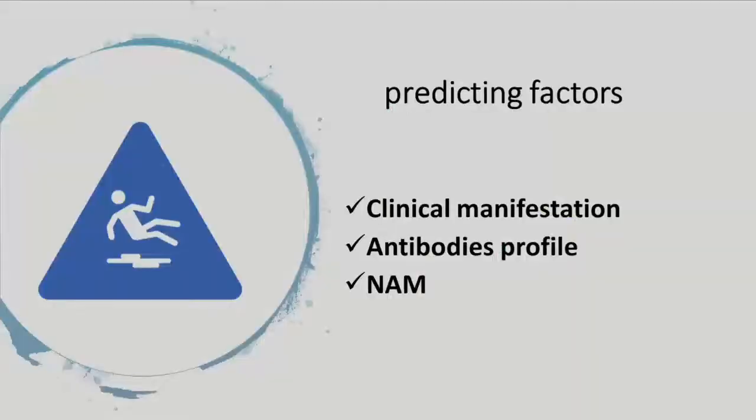Moving to predicting factors: through predicting factors we can categorize patients as having high or average risk to develop cancer. These can be divided into clinical manifestations, antibody profile, or the presence of certain clinical syndromes like necrotizing autoimmune myopathy.